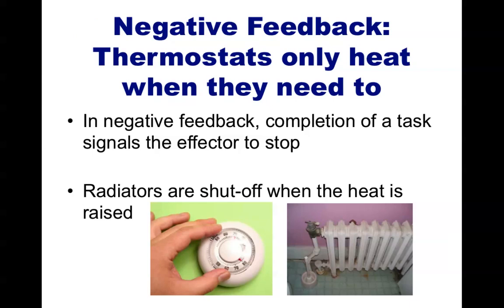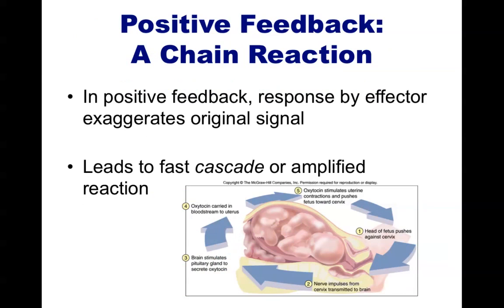Even the thermostat and radiator example mentioned earlier is an example of negative feedback. Positive feedback is less common, but it is still found controlling some systems in the body. In positive feedback, the response by the effector exaggerates the original signal, leading to an amplified or fast response — otherwise known as a cascade effect. One example is blood clotting, where a leak in a blood vessel must be rapidly repaired. Contractions during labor also exhibit positive feedback, leading to more frequent and intense contractions up until the moment of childbirth.